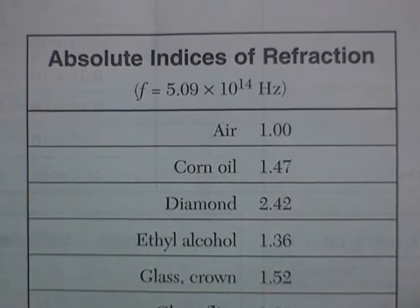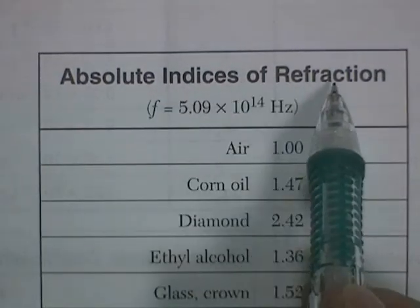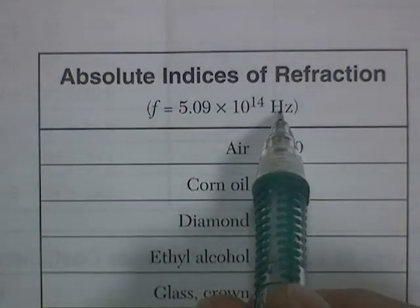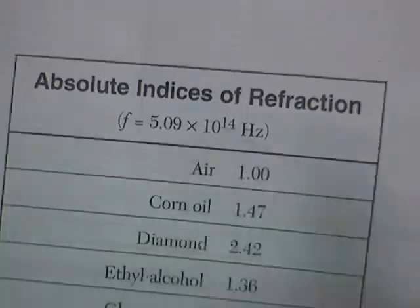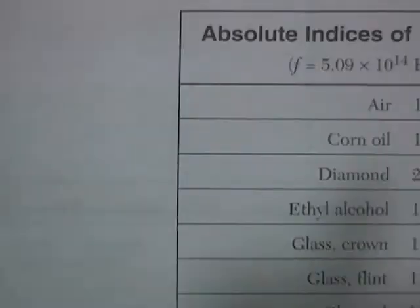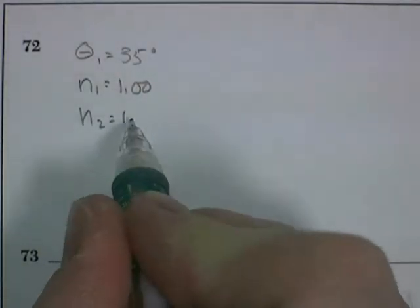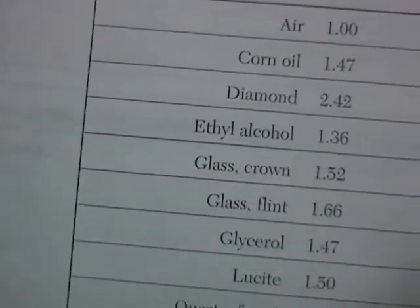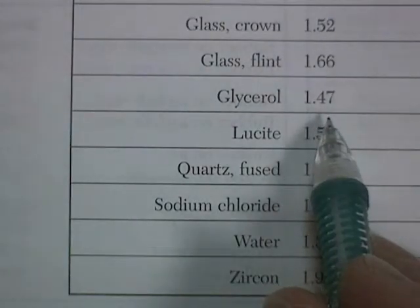We have a list on our formula sheet of things like air and corn oil, and they have an absolute index of refraction. But this is only applicable to a very specific frequency of light, which is why they told you the frequency of the light. The index of refraction for air is 1.00, and for corn oil, it's 1.47. As long as I'm here, I'm going to look up the index of refraction for glycerol because that might be useful later. There it is, also 1.47.